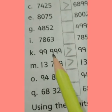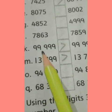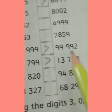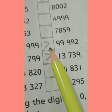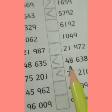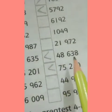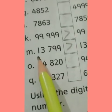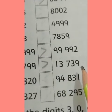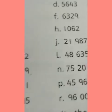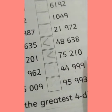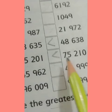Five-digit numbers: ninety-nine thousand nine hundred and ninety-nine versus ninety-nine thousand nine hundred and ninety-two — ninety-nine thousand nine hundred and ninety-nine is greater than. Forty-eight thousand six hundred and thirty-five versus forty-eight thousand six hundred and thirty-eight — thirty-eight is greater than. Thirteen thousand seven hundred and ninety-nine versus thirteen thousand seven hundred and thirty-nine — ninety-nine is greater than. Seventy-five thousand two hundred and one versus seventy-five thousand two hundred and ten — two hundred and ten is greater than.